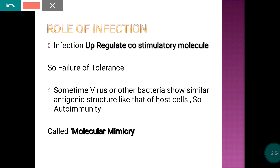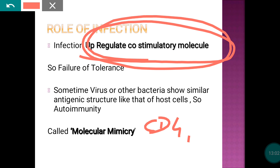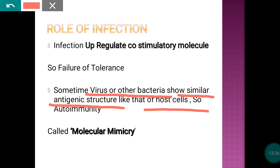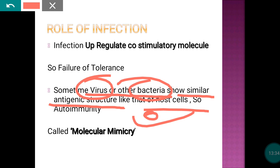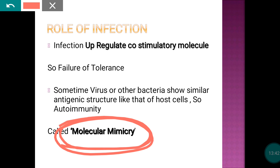Regarding the role of infection: infections can upregulate co-stimulatory molecules so that CD4 T lymphocytes and B cells are constantly stimulated, leading to constant antibody formation. Additionally, some viruses or bacteria display antigenic structures similar to host cell antigens, so the body develops antibodies against both the pathogen and the host cell antigen — this is known as molecular mimicry.